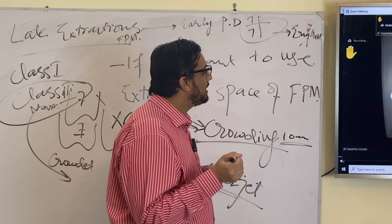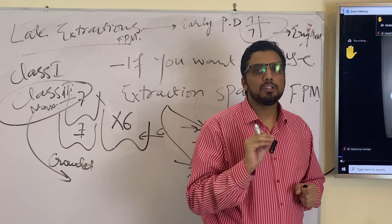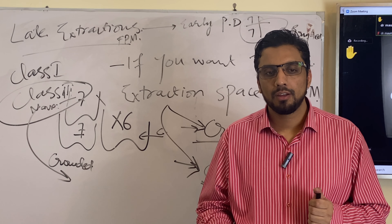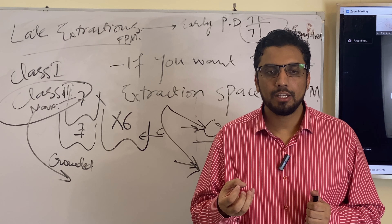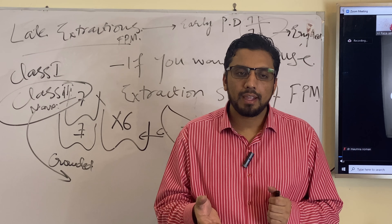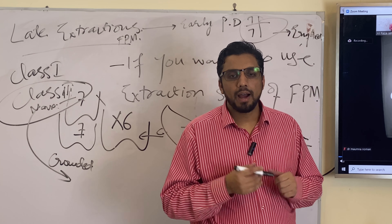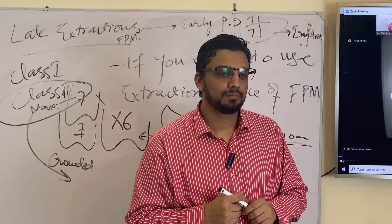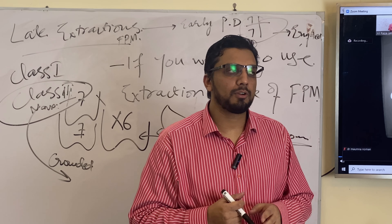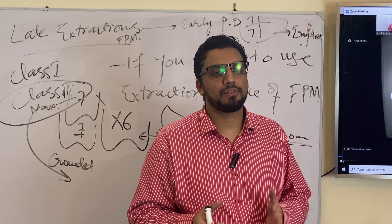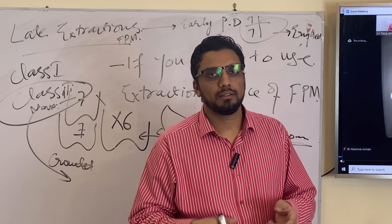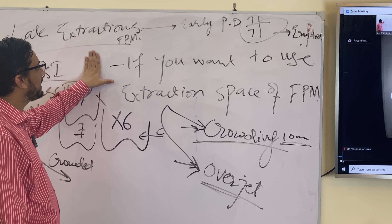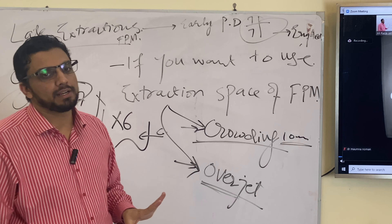When you have temporized the first permanent molar — done a pulpotomy, removed the pulp, made the tooth pain-free — this tooth acts as the best natural space maintainer. This is exactly why we are delaying the extraction, maintaining the space. The tooth is acting like a natural space maintainer while avoiding complications of band-and-loop space maintainers like broken bands and cement failure.